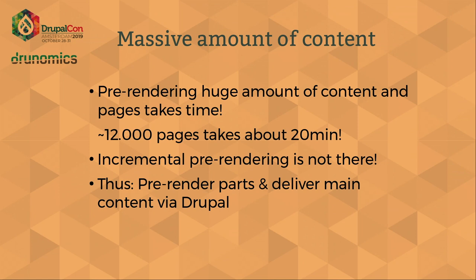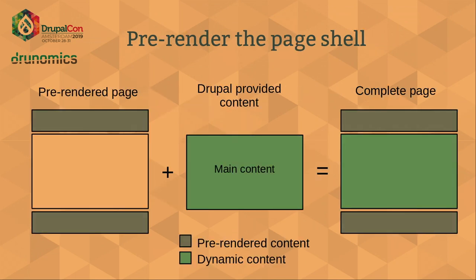The solution we came up with is to take pre-rendering for the mostly static parts and deliver the main content via Drupal — getting the benefits of both worlds. On a typical media site, the footer, header, and navigation are the same across all pages, so it makes sense to have those pre-rendered. You pre-render the header, footer, and navigation, then take the dynamic content from Drupal, put it together, and have a complete page with the pre-rendered shell and the main content dynamically served from Drupal.